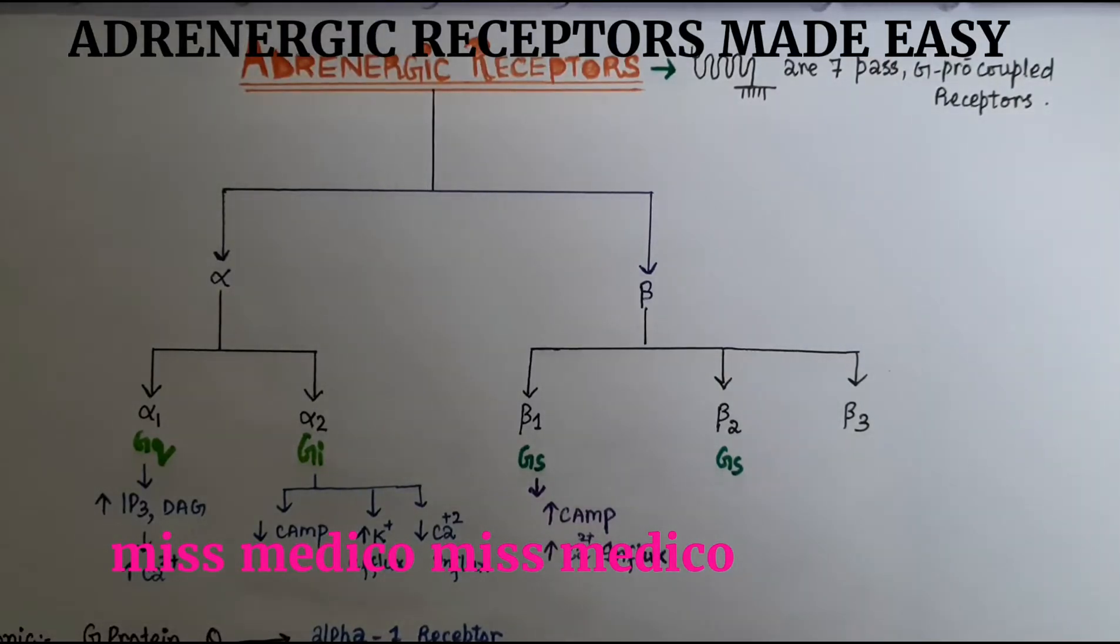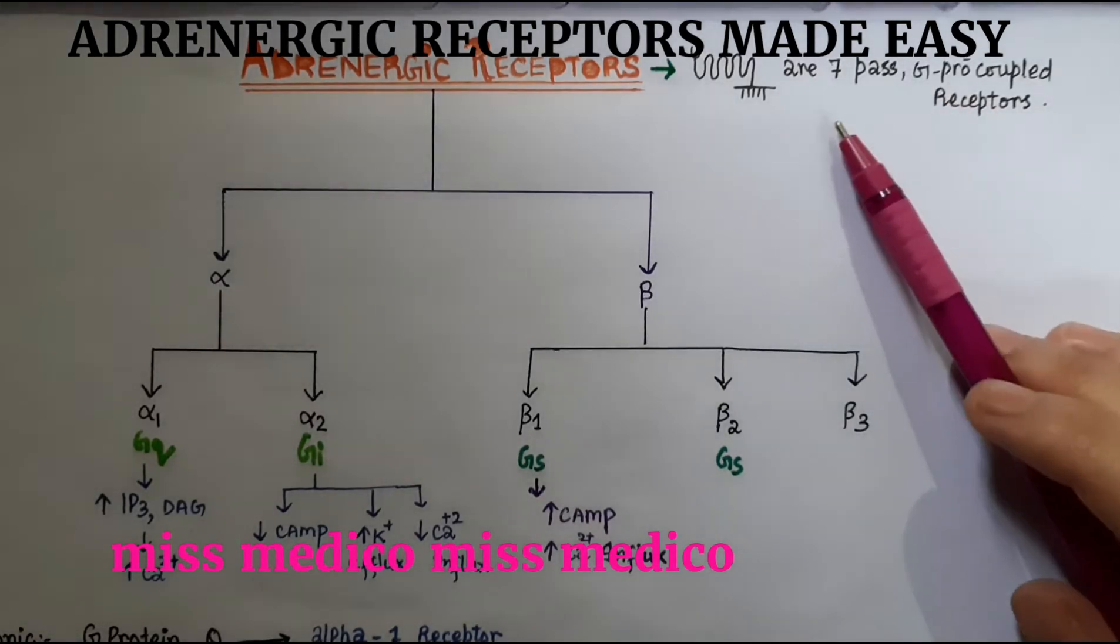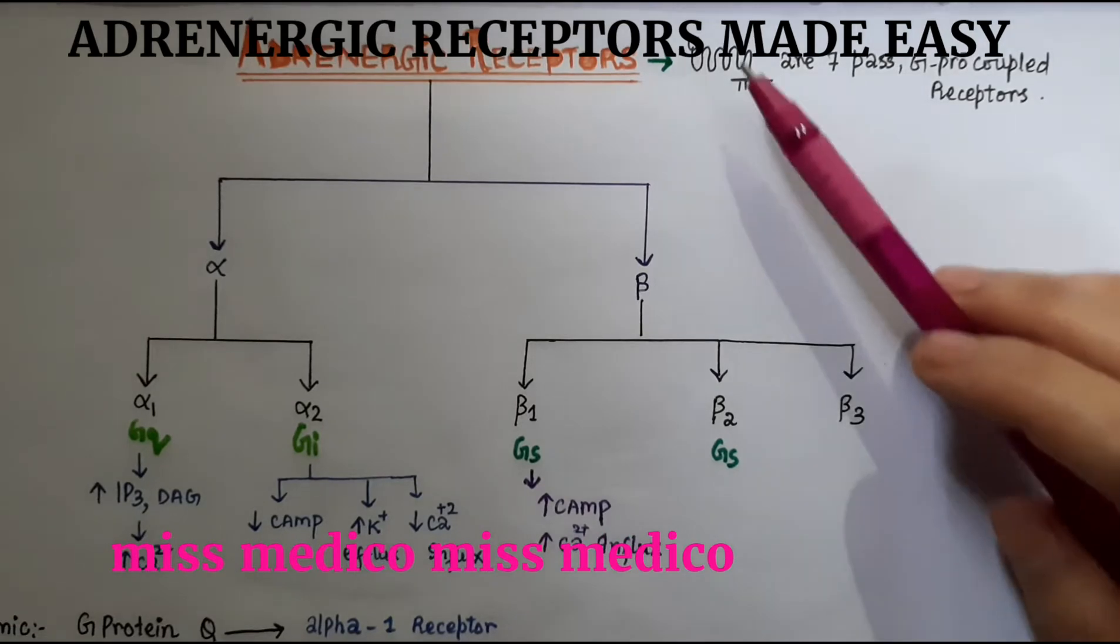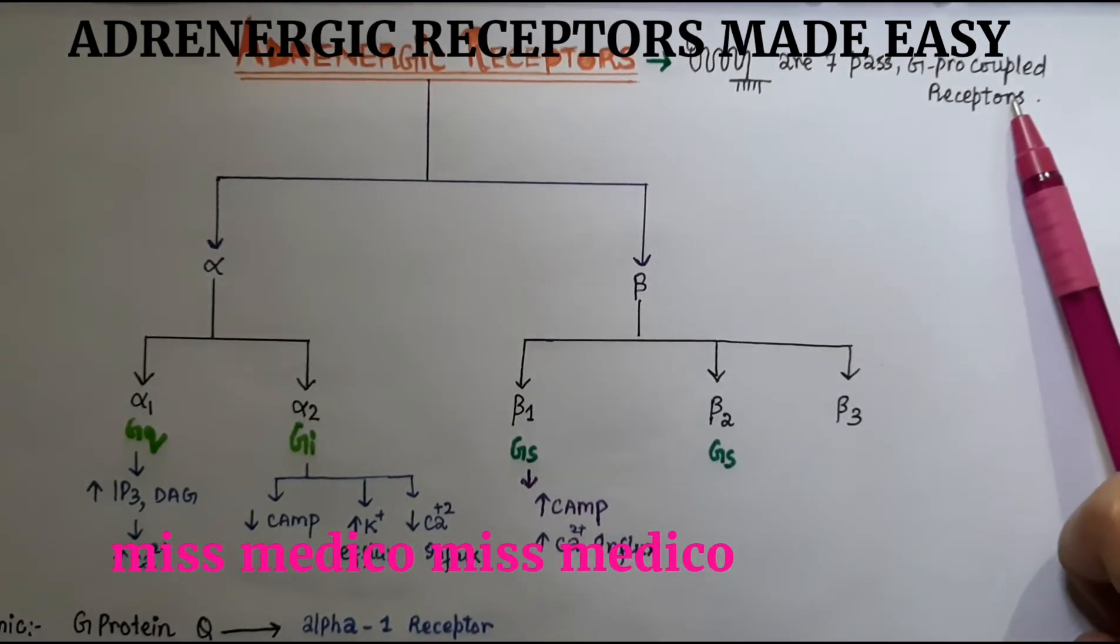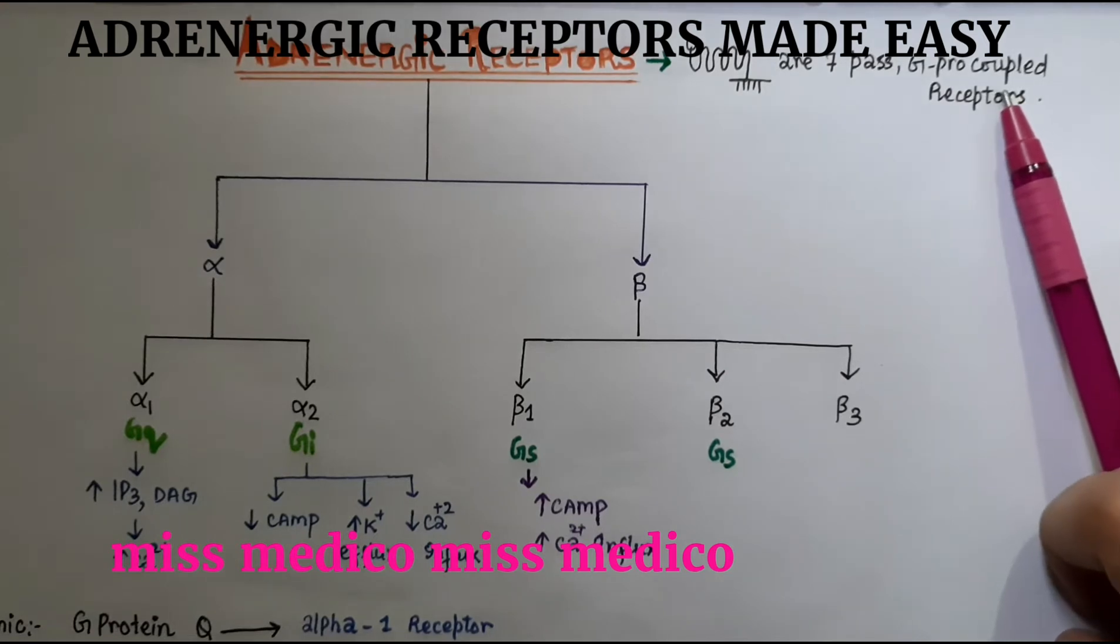Hello friends, this is Miss Medico channel and today's topic is adrenergic receptors. These are seven-pass receptors - they pass through the membrane seven times. They are also called G-protein coupled receptors or serpentine receptors and are located on nerves as well as target organs.